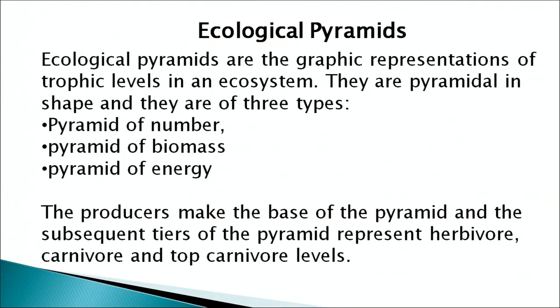This energy flow through an ecosystem can also be represented graphically. Ecological pyramids are the graphic representation of the trophic levels of an ecosystem. They are pyramidal in shape and of three types: pyramid of number, pyramid of biomass, and pyramid of energy. Producers form the base of the pyramid, and subsequent tiers represent herbivores, carnivores, and top carnivores.